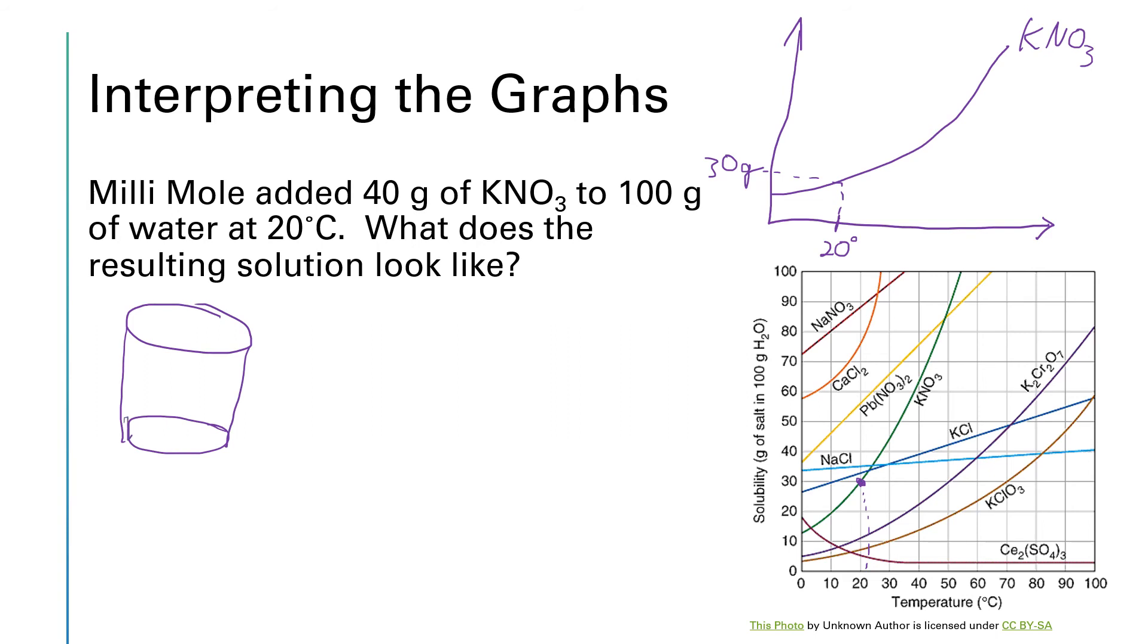So to kind of make a little sketch of what that will look like in her beaker. She's going to have a bunch of undissolved potassium nitrate down at the bottom. In fact, that'll be 10 grams of KNO3 as a solid. And then the solution above it will be a saturated aqueous potassium nitrate. And that will be 30 grams of KNO3 in 100 grams of water.